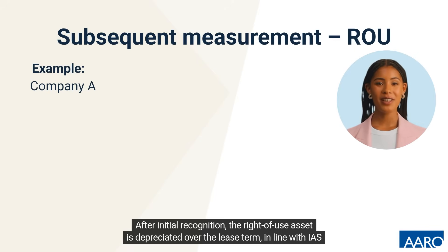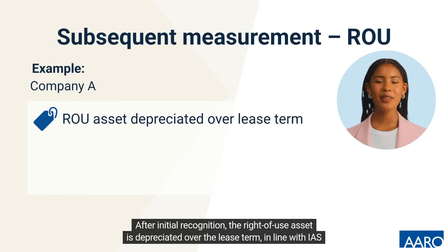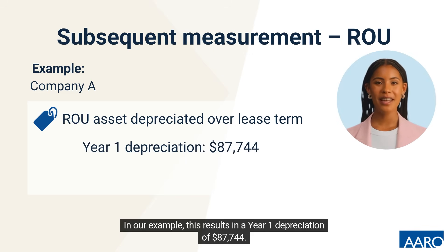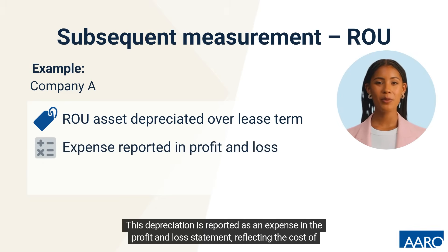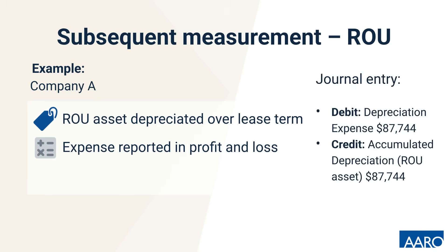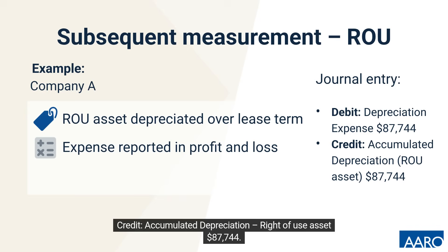After initial recognition, the right-of-use asset is depreciated over the lease term, in line with IFRS 16. In our example, this results in a year one depreciation of $87,744. This depreciation is reported as an expense in the profit and loss statement, reflecting the cost of using the leased asset over time. To record this, the journal entry is: Debit depreciation expense $87,744 and Credit accumulated depreciation — right-of-use asset $87,744.